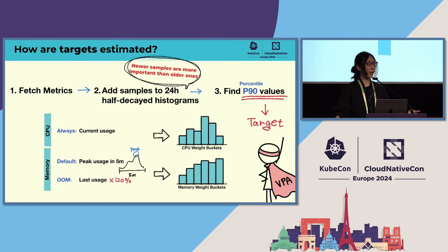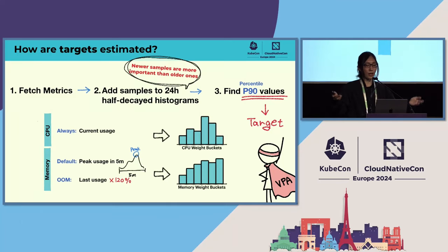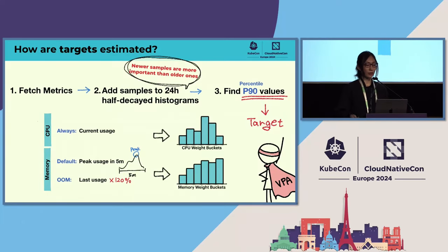How does VPA estimate its recommendations? Periodically, VPA collects container metrics and adds them to histograms. It uses a half-decay histogram — after 24 hours, the sample's weight is halved. By giving more weight to newer data, VPA can quickly adapt to changes in resource usage trends. VPA also handles metrics differently for each resource type.